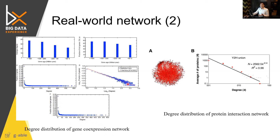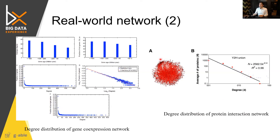This is the protein-protein interaction (PPI) network — the network that explains interactions between proteins, specifically whether one protein suppresses or enhances the activity of another in an organism. Scientists who study and draw this network find that it also obeys power laws: the degree in logarithmic scale and the average number of proteins at that degree follow a power law distribution.